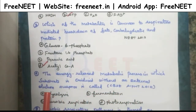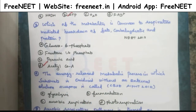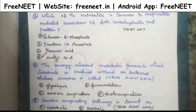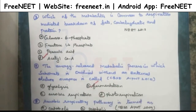The fourth question asks: the energy released in a metabolic process in which the substrate is oxidized without an external electron acceptor is called what? Among the four options, one process is oxidized without getting an external electron acceptor. The answer is fermentation.